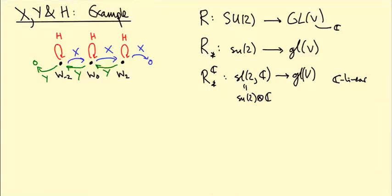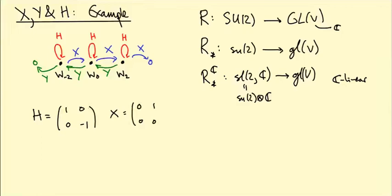I claimed that we can say something about how the basis elements of little sl2C act. The basis of little sl2C as a complex vector space was H, which is the matrix (1, 0; 0, -1), X, which is (0, 1; 0, 0), and Y, which is (0, 0; 1, 0).